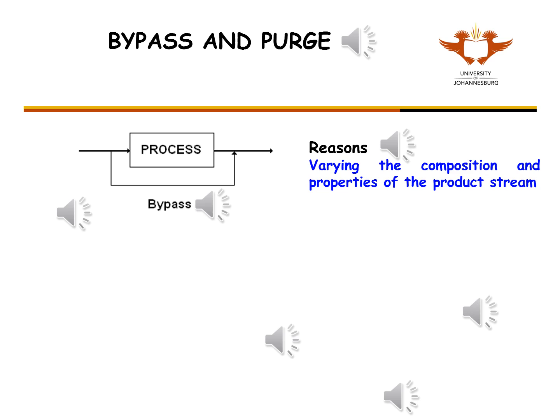A bypass stream could, for example, change the temperature of the stream exiting the plant. If the process involves a chemical reaction, it would also decrease the concentration of the chemical product.